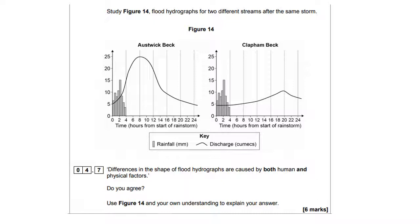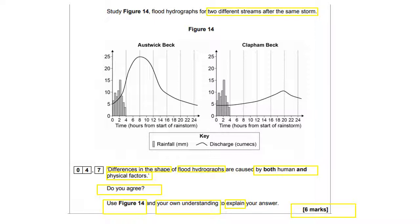First thing I want you to do is highlight the key words of the question. Study figure 14 — flood hydrographs for two different streams after the same storm. You've got to be aware that the rainfall is the same event in both. The examiner doesn't want you talking about the amount of rainfall affecting the hydrograph; he wants something different. The key word here is differences in the shape. I don't want similarities — if you give me similarities, I'm not going to give you any marks. You need to look at that black line and tell me how the shape of it alters.